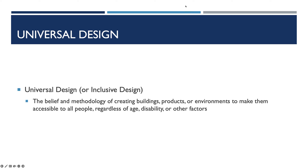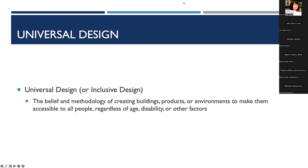Setting disabilities aside for a moment, consider other scenarios for accessing content. Imagine a student without a hearing impairment who finds themselves in a library where they must maintain silence. They wouldn't be able to use speakers to listen to audio or video, so captions would become very helpful. This shows the beauty of universal design — it benefits everyone by creating an environment where all students, regardless of circumstances, can access and engage with content seamlessly.